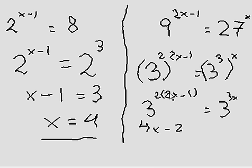Here I can expand and make this 4x minus 2. Because I just distributed 2 times 2x, 4x, 2 times negative 1, negative 2, is equal to 3x.